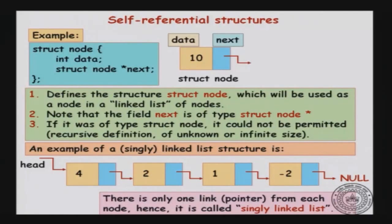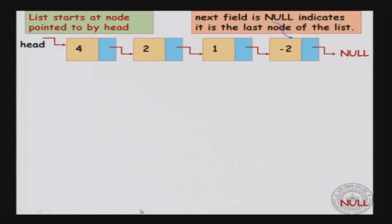Using this structure, we can define what is known as a singly linked list. An example would be a pointer called the head of the list. Head points to the first struct which has data 4, linked to another struct with data 2, then data 1, and so on. The last struct in the list is linked to null, and since there is only one link from each node, hence the name singly linked list.